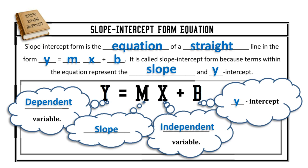y and x remain y and x. They could also be used later to substitute in x and y coordinates from an ordered pair. If you substitute in an x and y ordered pair and you get a true statement, that means that point is located somewhere on that line. This is one reason we leave y and x as variables — so we can substitute in to check solutions.